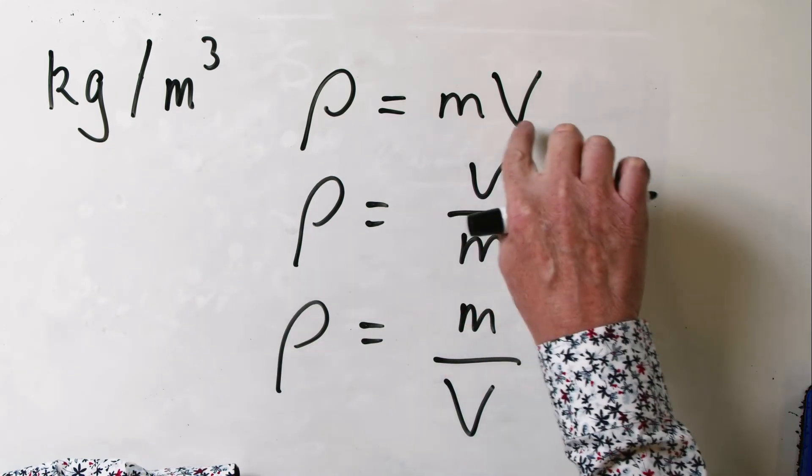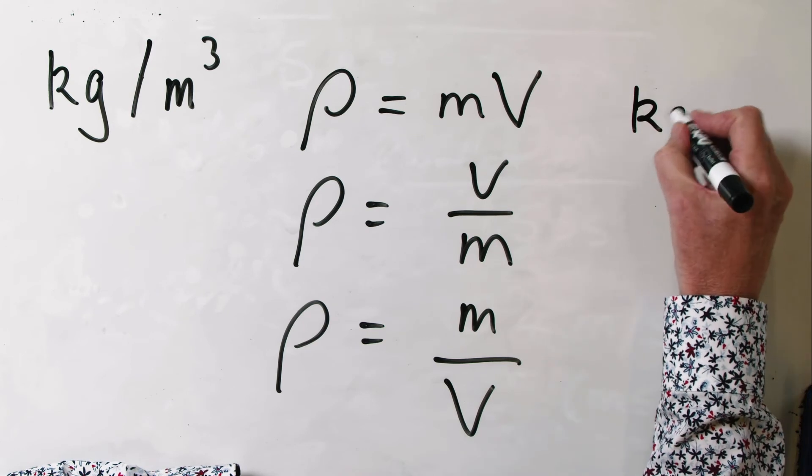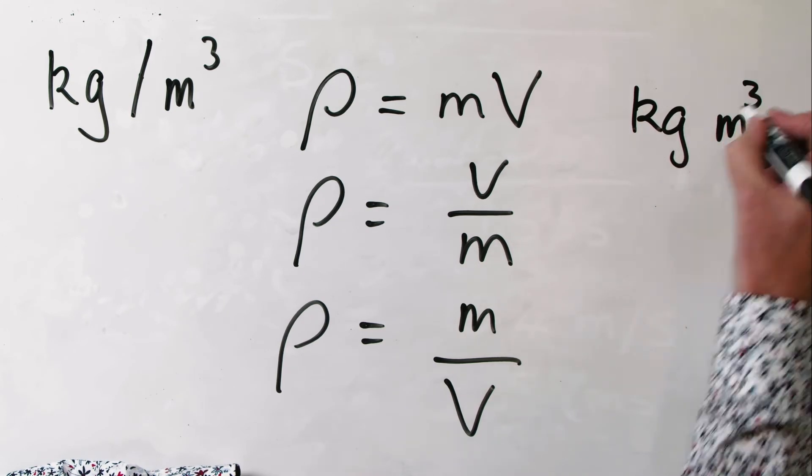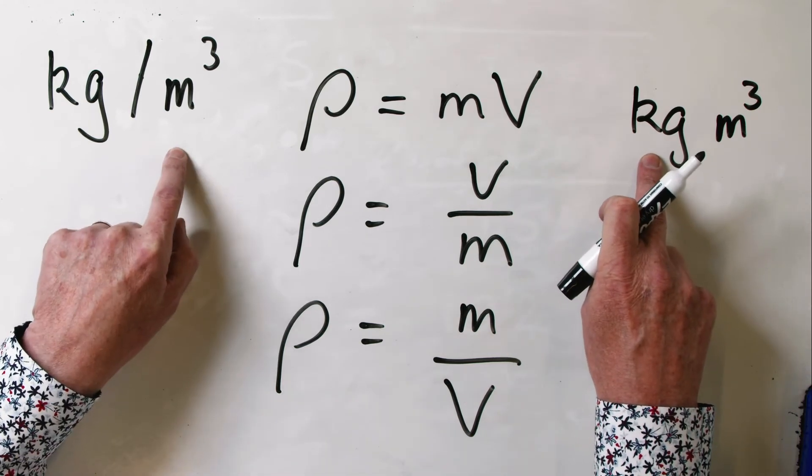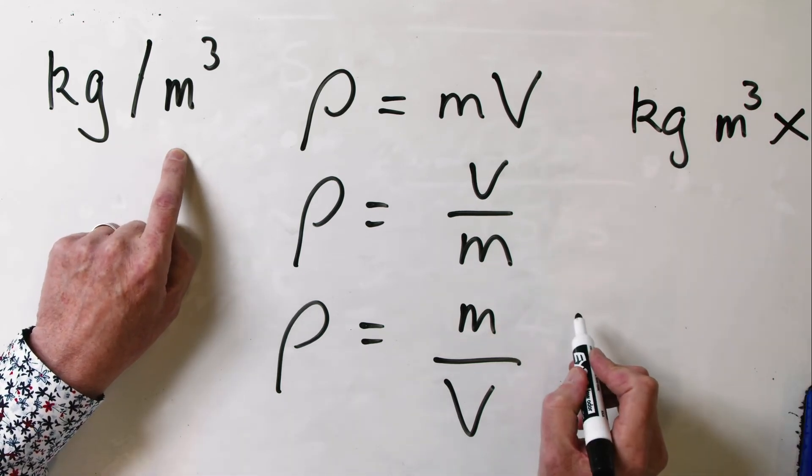What do we get if we multiply mass by volume? We're going to get units of kilograms multiplied by cubic metres. That is not kilograms divided by cubic metres, so this must be wrong.